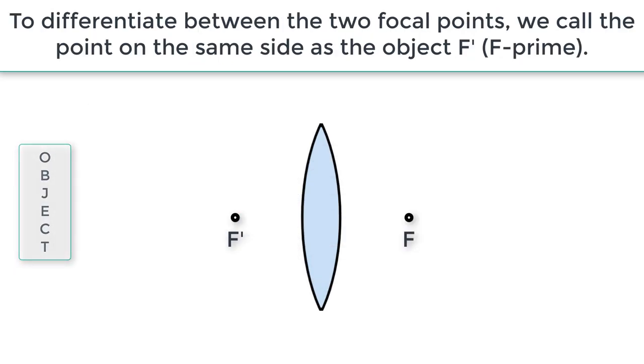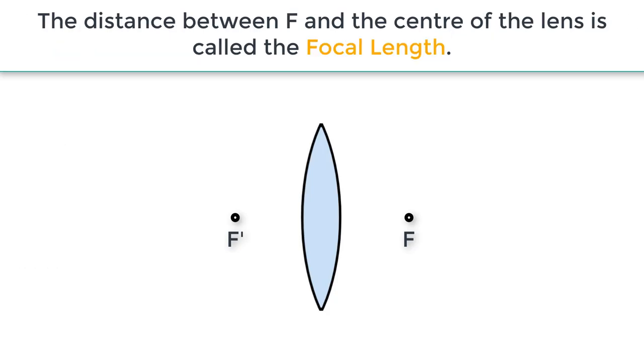To differentiate between the two focal points, we call the point on the same side as the object F prime. The distance between F and the center of the lens is called the focal length.